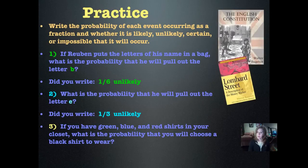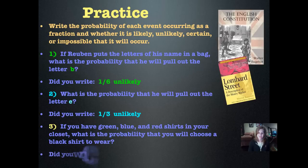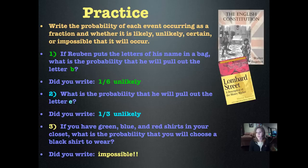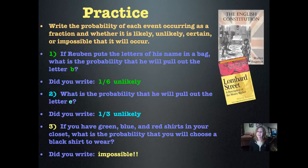Problem three: If you have green, blue, and red shirts in your closet, what is the probability you will choose a black shirt to wear? The answer is impossible. There are zero chances of pulling a black shirt when all the shirts are green, blue, or red. In math, if those are the only colors in the closet, you can say with certainty it is impossible that you will wear a black shirt.